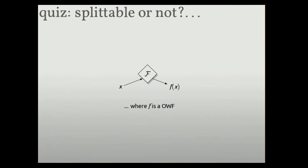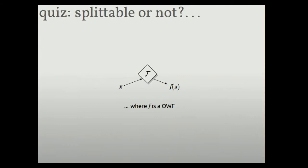So these concepts apply to arbitrary functionalities. So just to reinforce our understanding, here's a pop quiz. This functionality takes in X from Alice, and it gives F of X to Bob, where F is a one-way function. Is this a splittable function, or is it strongly unsplittable?